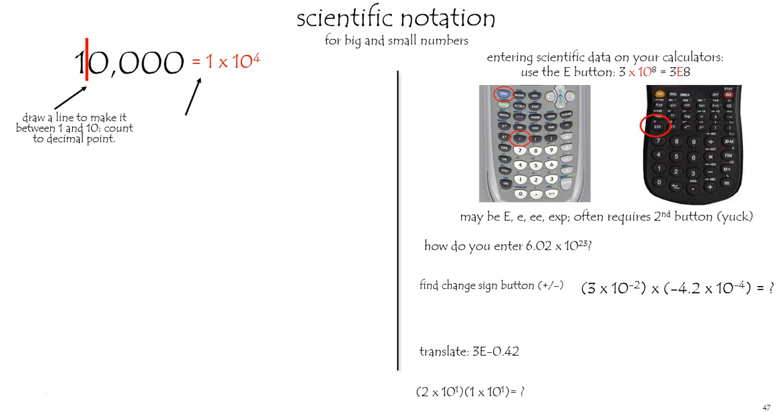To be proper, scientific notation should always begin with a number between 1 and 10 and end with 10 to some power. Therefore, 217 times 10 to the third is not proper scientific notation.